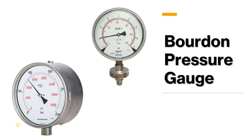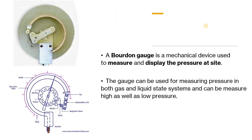Hello, Core Engineering family. In this video we are going to discuss one of the most important instruments used to measure pressure locally at a site — that is your Bourdon pressure gauge. More than 80 percent of the time, whenever you have to measure pressure locally at the plant — for example at the pump discharge side or upstream and downstream of a heat exchanger — we use the Bourdon pressure gauge.